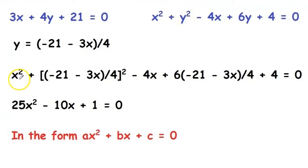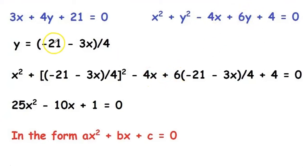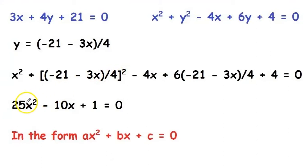We then substitute this y into the circle equation: x² + ((−21 − 3x) / 4)² − 4x + 6 × ((−21 − 3x) / 4) + 4 = 0. When we simplify all of this, we get 25x² − 10x + 1 = 0.